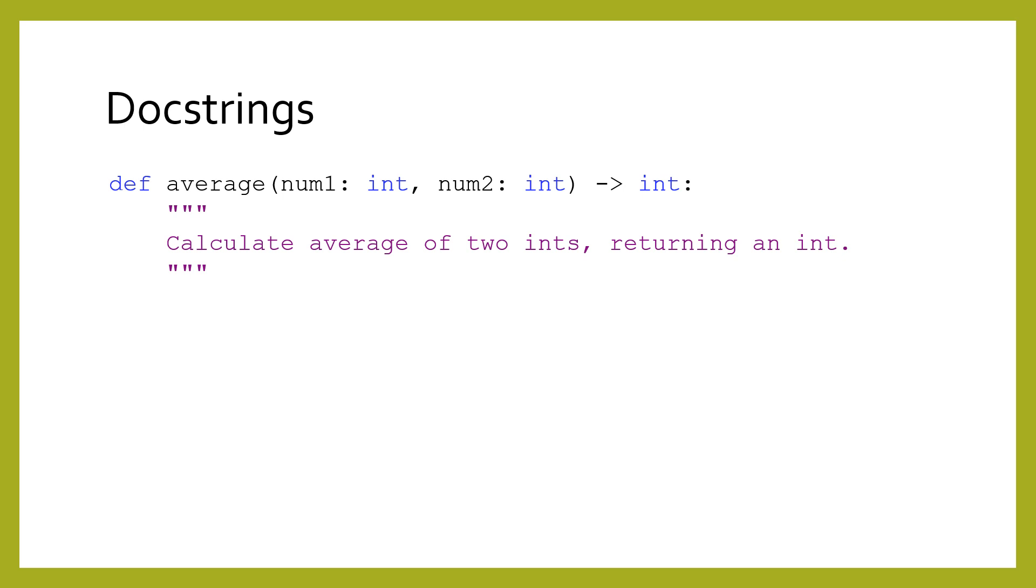We previously mentioned that the first line of the function's body should always be a string literal. Specifically, it should always be a triple quoted string with specially formatted contents. This is a special kind of comment that Python recognizes as the function's doc string. A doc string is a very important kind of documentation that helps explain the purpose of a function to other programmers.